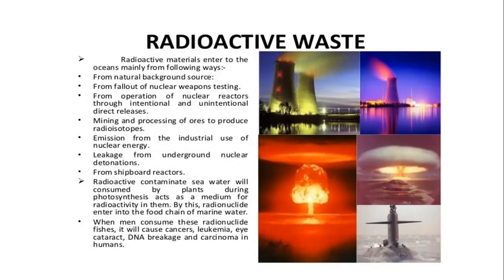Radioactive materials enter the ocean mainly from natural background sources, fallout from nuclear weapons testing, operation of nuclear reactors, intentional direct releases, mining and processing of ores to produce radioisotopes, emissions from industrial use of nuclear energy, leakage from underground nuclear detonations, and ship-borne reactors. Radioactive contaminants in sea water are consumed by plants during photosynthesis, and radionuclides enter the food chain. When human beings consume these radioactive nucleic tissues, it can cause cancer, leukemia, eye cataracts, DNA damage, and carcinoma.